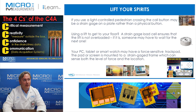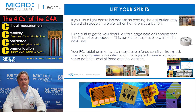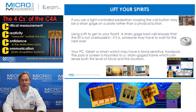If you use a light-controlled pedestrian crossing, the call button may be a strain gauge on a plate rather than a physical button. Using a lift to get to your floor, a strain gauge load cell ensures that the lift is not overloaded, and if it is, someone may have to wait for the next one. Your PC, tablet, or smart watch may have a force-sensitive track pad — the pad or screen is mounted on a strain gauge base frame which can sense both the level of force and the location.